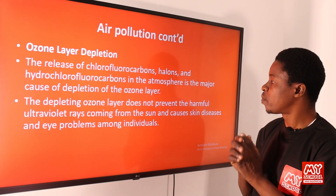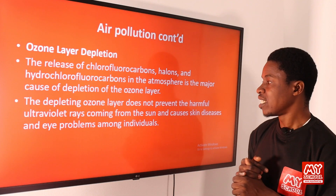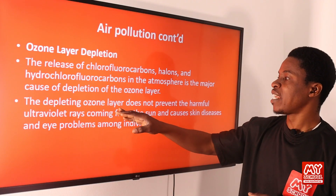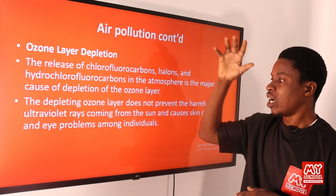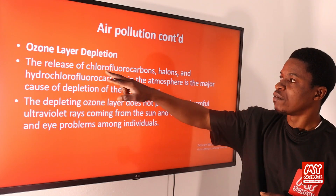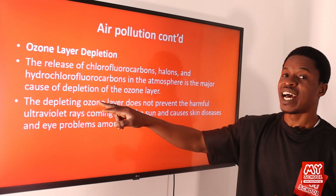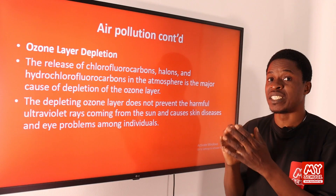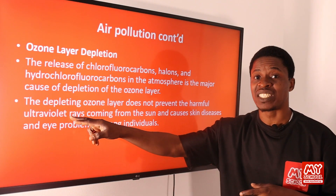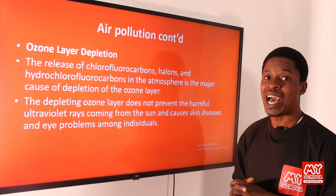The depleting ozone layer cannot prevent harmful ultraviolet (UV) rays coming from the sun, causing skin diseases and eye problems among individuals. Once these gases are released into the atmosphere, they attack the ozone layer. Once the ozone layer becomes depleted, it can no longer efficiently prevent the UV rays from reaching us, leading to skin disease and eye problems.